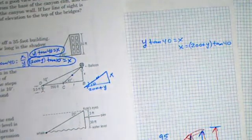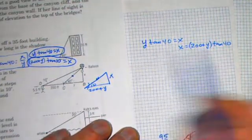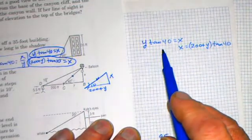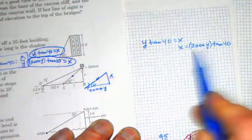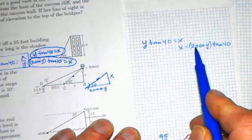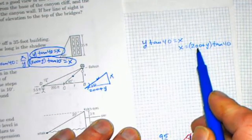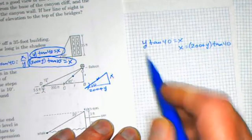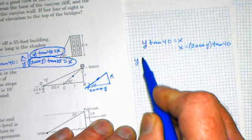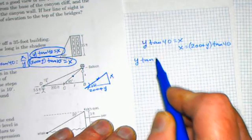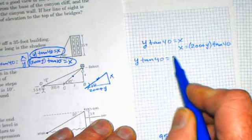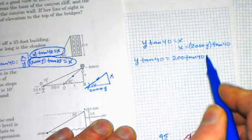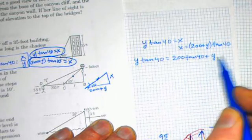I'm going to copy this over. One equation is y tan 40 equals x and also x is equal to 200 plus y times tan 10. So set these equal to each other. On this right-hand side, we've got to use the distributive property. We've got 200 times tan 10 plus y times tan 10. So let's put that step in: y tan 40 equals 200 tan 10 plus y tan 10 using the distributive property.